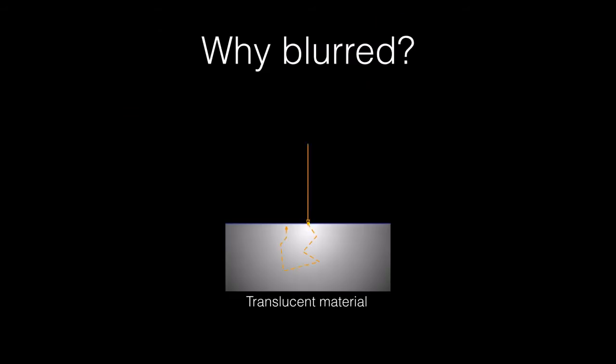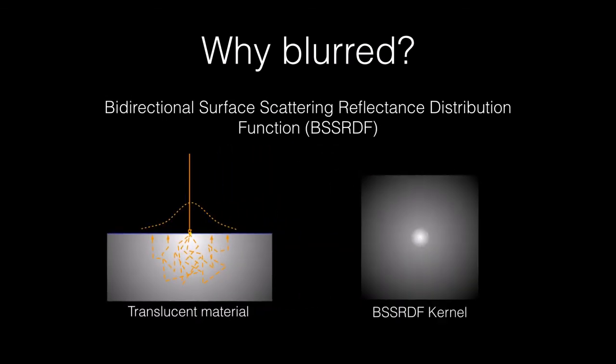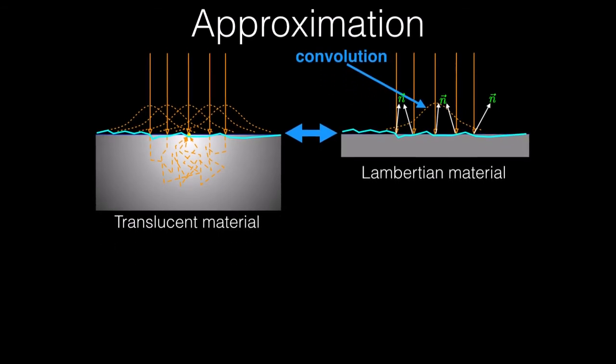Subsurface scattering of translucent materials described by the BSSRDF makes our observation blurred. The blurring process can be represented approximately as the convolution between the BSSRDF kernel and ground truth surface normals.